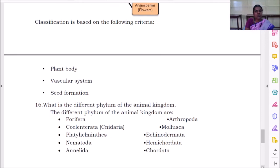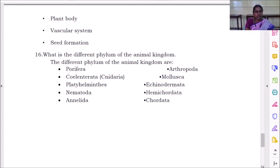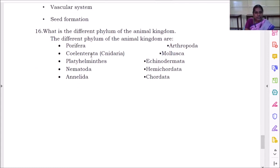Next question is what is the different phylum of the animal kingdom? What are the phylum we have studied? Porifera, coelenterata, platyhelminthes, nematoda, annelida, arthropoda, mollusca, echinodermata, hemichordata, and chordata. It is easier to remember.